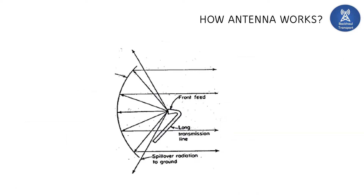On screen you can see a microwave antenna. When you break it down, you can see three components: the parabolic surface, the transmitter, and a waveguide. The waveguide is positioned so that the entire energy from the transmitter is focused onto the parabolic surface, gets reflected, and is passed through the atmosphere.